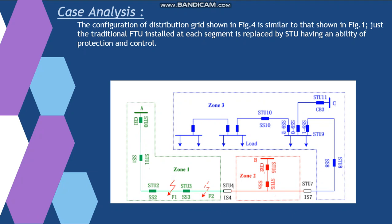STU2 has seen a fault current but STU3 does not detect the fault current because IS4 is open. Therefore, the section between SS2 and SS3 can be identified as the faulted area. And STU3 and STU2 send trip command to SS2 and SS3.